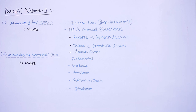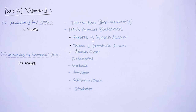Now we are understanding the syllabus in detail. Part A, Volume 1, Chapter 1 is accounting for not-for-profit organizations — its weightage is 10 marks. In the introduction, we will understand basic accounting and make financial statements of not-for-profit organizations. Under this, we will make receipts and payment accounts. You will get to know what are capital receipts, revenue receipts, capital payments, and revenue payments. Then we will make income and expenditure account.